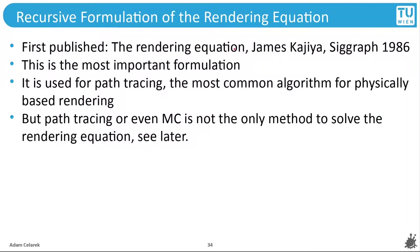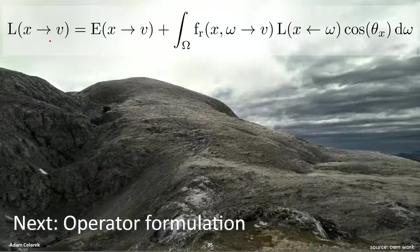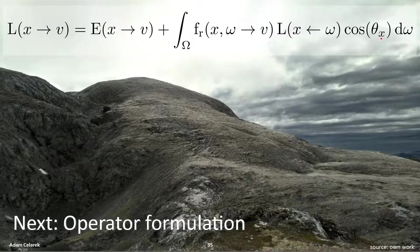The recursive formulation of the rendering equation was first published at SIGGRAPH 1986. This is the most important formulation of the rendering equation and is used for path tracing, which is the most common algorithm for physically based rendering — all Hollywood studios use path tracing. But path tracing, or even Monte Carlo, is not the only method to solve the rendering equations. To summarize: the exitant light of a point x into direction v is the emitted light plus the integral over the hemisphere of the incident light over all angles, times the cosine weighting, times the BRDF.